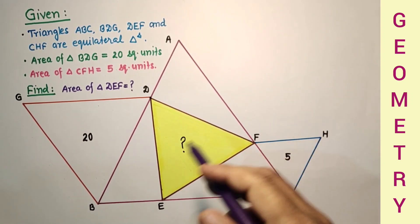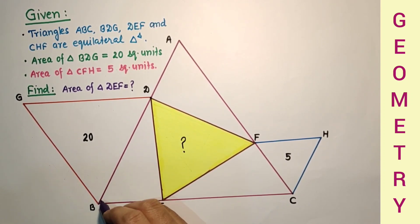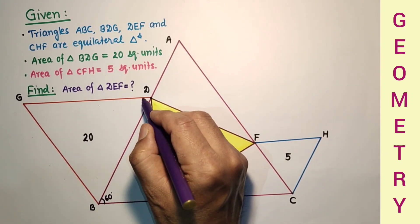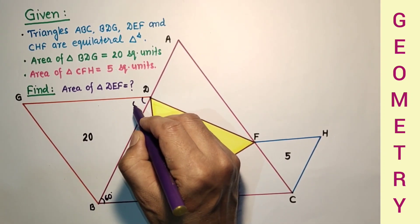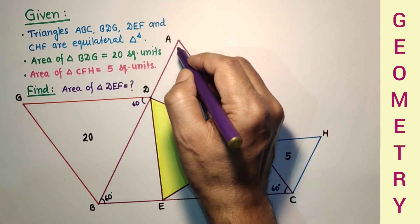Since the triangles are equilateral triangles, each angle of an equilateral triangle will be 60 degrees. This angle is 60, this is also 60, 60 here, and this is 60.